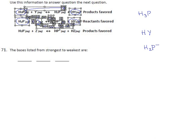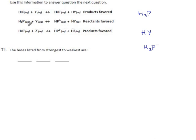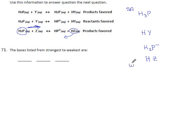For the last one, H2P minus has to be the acid on the left — it's the only thing with any hydrogen. On the right side we have HZ. The products are favored, so the reaction is going to the right. H2P minus is our strongest acid here — it's stronger than HZ. So this is our strongest acid and this is our weakest acid.